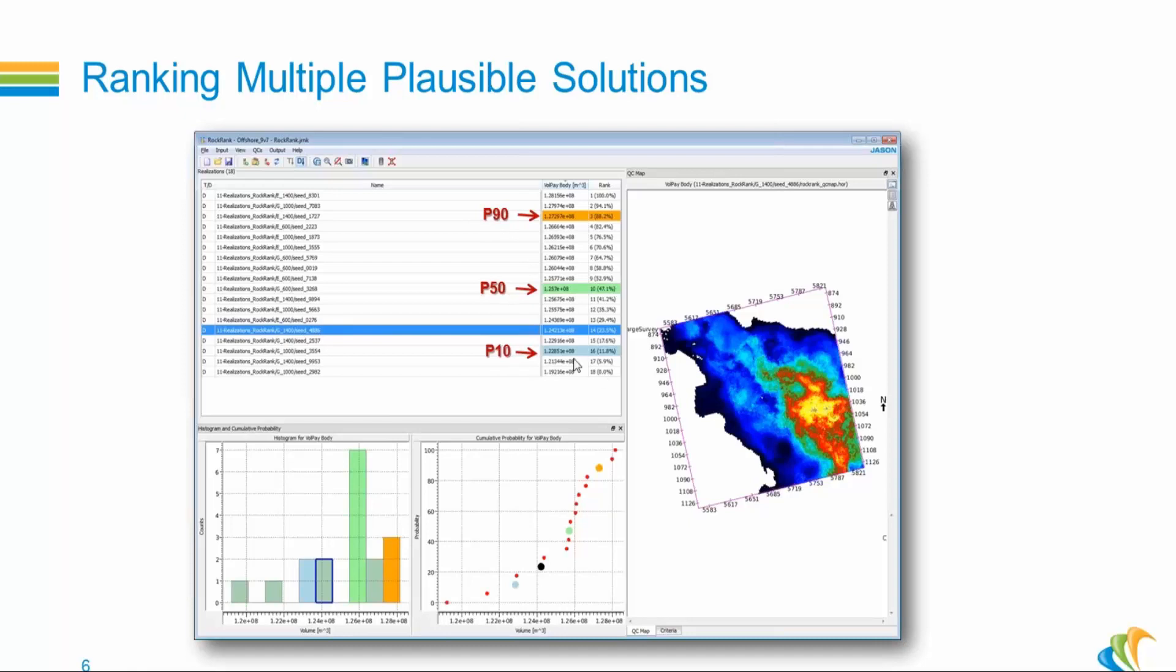P90, P50, P10 are shown with the color coding. You have the histogram of the value of the ranking criterion, and here you have the cumulative probability for that ranking criterion. And the QC map here on the right.